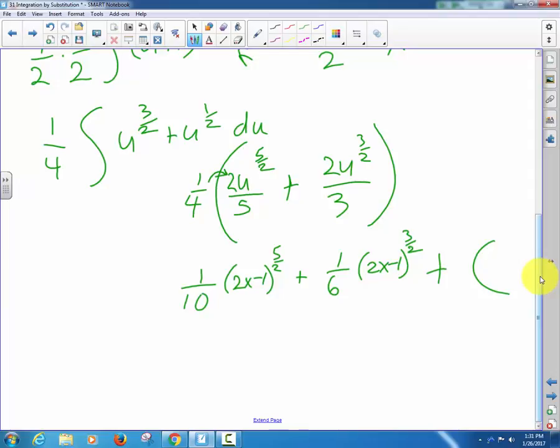Now, we want to get rid of the u. Remember, u was 2x minus 1. So, 1/10 (2x-1) to the 5/2, plus 1/6 (2x-1) to the 3/2, plus c. And if you take the derivative of that, after about 20 minutes, you can get back to where we started from. 1/4 times 2/5, that's 2/20, which I reduced down to 1/10. Same thing, 1/4 times 2/3, 2/12, which I reduced down to 1/6.